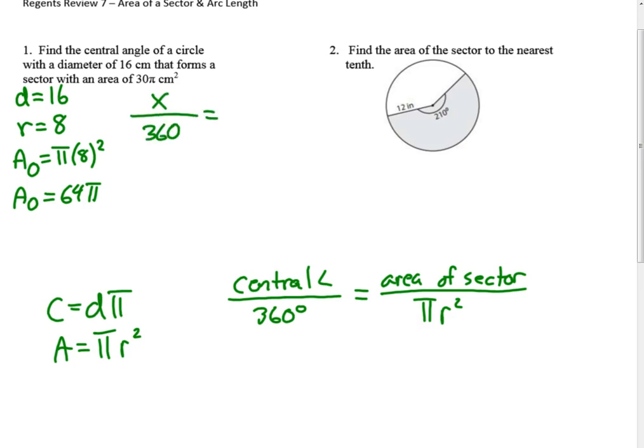...equals that forms a sector with an area of 30 pi over 64 pi. Now we need to use our cross-product property to solve. Those pi's will cancel each other out, so it'll just be 64x equals 360 times 30, which is 10,800. We divide that by 64.